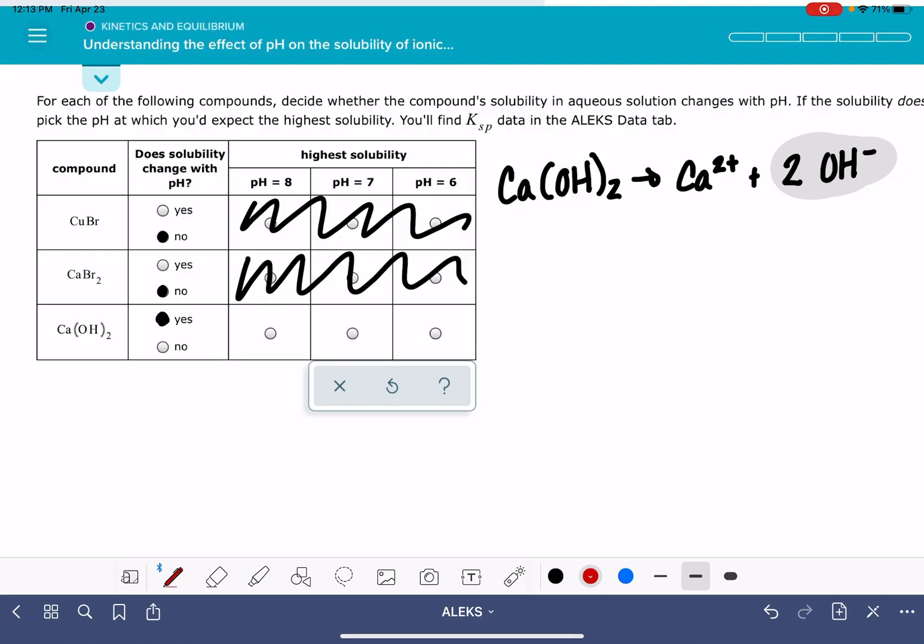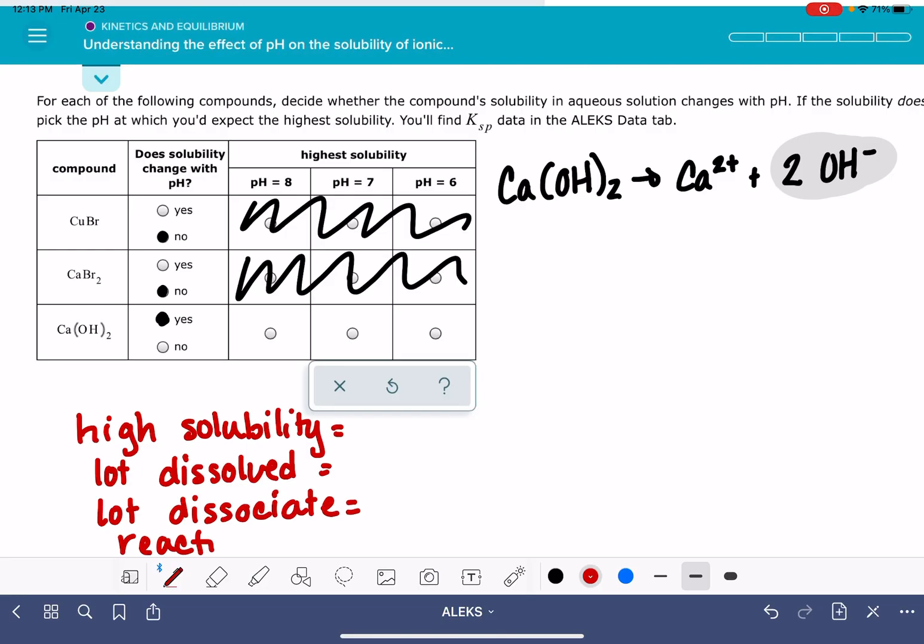So here's the strategy that you're going to take to solve this problem. High solubility, that just means that you have a lot of the substance dissolved, which also means that you have a lot that has been dissociated, which means that we want the reaction going to the right. So we want the reaction to go this way. So we need to think about Le Chatelier's principle. What could we do to get the reaction to move in this direction?